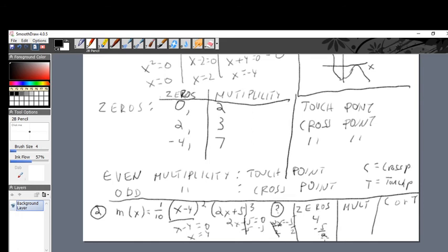Right? The multiplicity of 4 is going to be 2. The multiplicity of negative 5 halves is going to be 3. And this touchpoint... 4, 0. Since the multiplicity is even, therefore, it is a touchpoint. And over here, since it's odd, it's going to be a crosspoint.